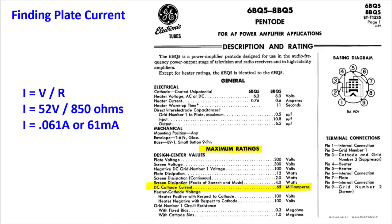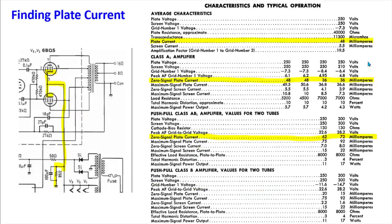I intentionally chose the 6BQ5, otherwise known as the EL84, because its data sheets have a lot of information. Some tubes have lacking data sheets. For example, this sheet gives average characteristics with a plate current of 48 milliamps — so at 61 milliamps we may be running a little hotter than average.